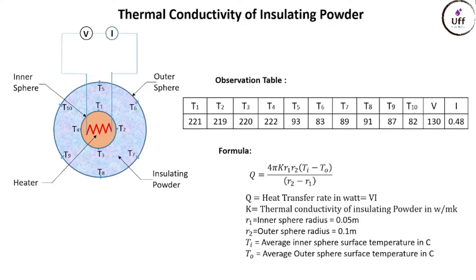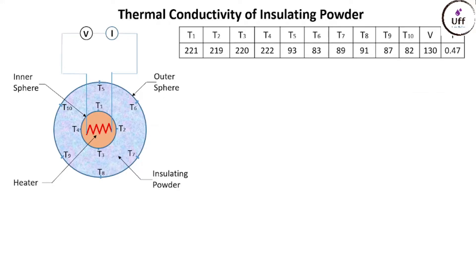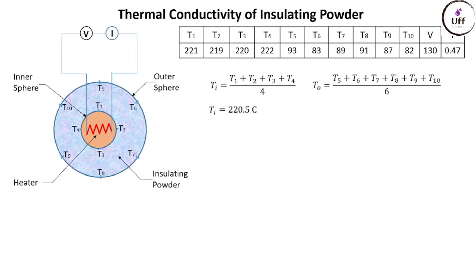R1 is the inner sphere radius, which is 0.05 meters. R2 is the outer sphere radius, which is 0.1 meters. Ti is the average inner sphere surface temperature in degrees centigrade, and To is the average outer sphere surface temperature. Ti is the average of T1, T2, T3, and T4 — in our case 220.5°C. To is the average of T5 to T10 — in our case 87.5°C.